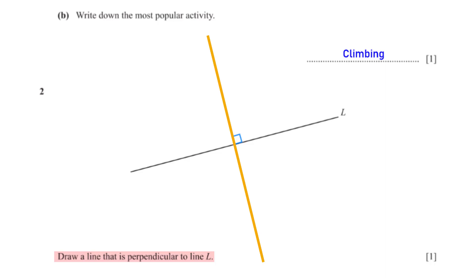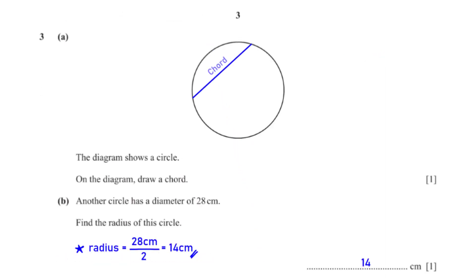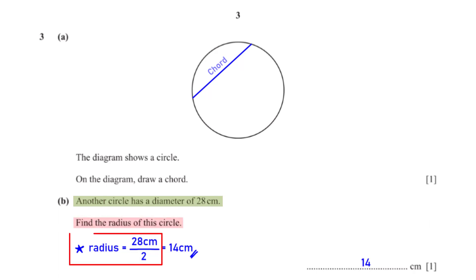The diagram shows a circle. On the diagram, we've drawn a chord. A chord is a line that connects two points on the circumference of a circle. Another circle has a diameter of 28 centimeters. To find the radius of this circle, we divide 28 centimeters by two, which gives us 14 centimeters.